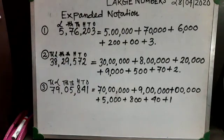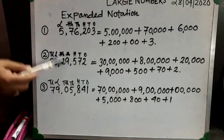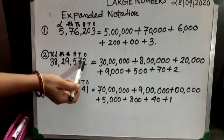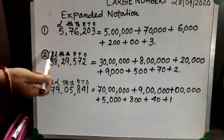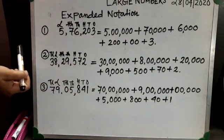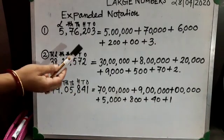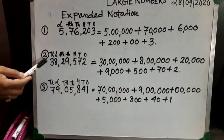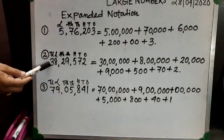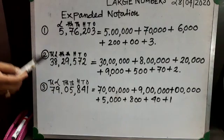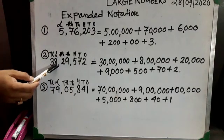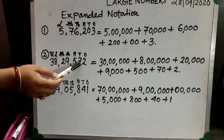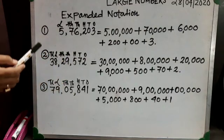The next example is a slightly bigger number — a seven-digit number. First, look at the number, then write the place values: ones, tens, hundreds, thousands, ten thousands, lakhs, and the new place, which is ten lakhs. My number is thirty-eight lakh twenty-nine thousand five hundred seventy-two.